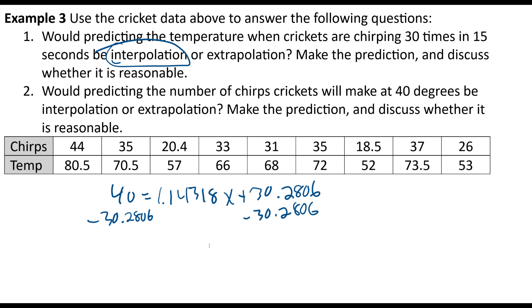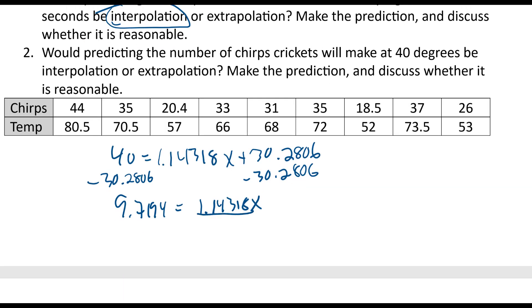And I get 9.7194 equals 1.14318 X. And then divide by this coefficient, 1.14318.